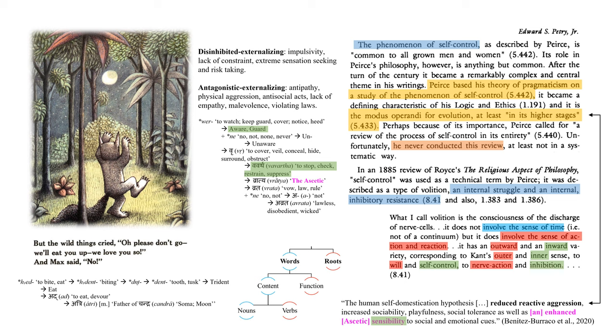An idea we saw a few lectures back in the idea of the self-domestication hypothesis, where reduced reactive aggression, increased sociability, playfulness, social tolerance, as well as an enhanced ascetic sensibility for social and emotional cues, were qualities of the stranger's sanctuary being solemnly proclaimed in Eulogy to the Highest Good. Perhaps because of its importance, Pierce called for a review of the processes of self-control in its entirety. Unfortunately, he never conducted this review, at least not in a systematic way. In an 1885 review of Royce's The Religious Aspects of Philosophy, self-control was used as a technical term by Pierce. It was described as a type of volition, an internal struggle, and an internal inhibitory resistance. Pierce writes: What I call volition is the consciousness of the discharge of nerve cells. It has an outward and an inward variety, corresponding to Kant's outer and inner sense, to will and self-control, to nerve action and inhibition.